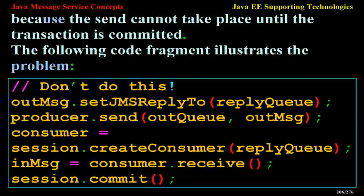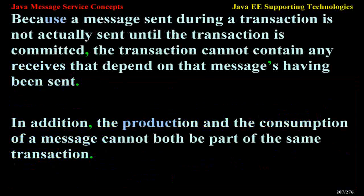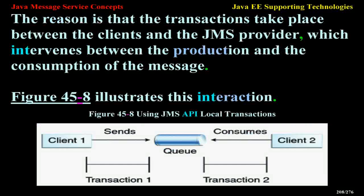You can combine several sends and receives in a single JMS API local transaction, but you need to be careful about the order of operations. You will have no problems if the transaction consists of all sends, all receives, or if the receives come before the sends. But if you try to use a request-reply mechanism — whereby you send a message and then try to receive a reply to that sent message in the same transaction — the program will hang, because the send cannot take place until the transaction is committed. Because a message sent during a transaction is not actually sent until the transaction is committed, the transaction cannot contain any receives that depend on that message having been sent. Also, the production and consumption of a message cannot both be part of the same transaction, because the transactions take place between clients and the JMS provider.